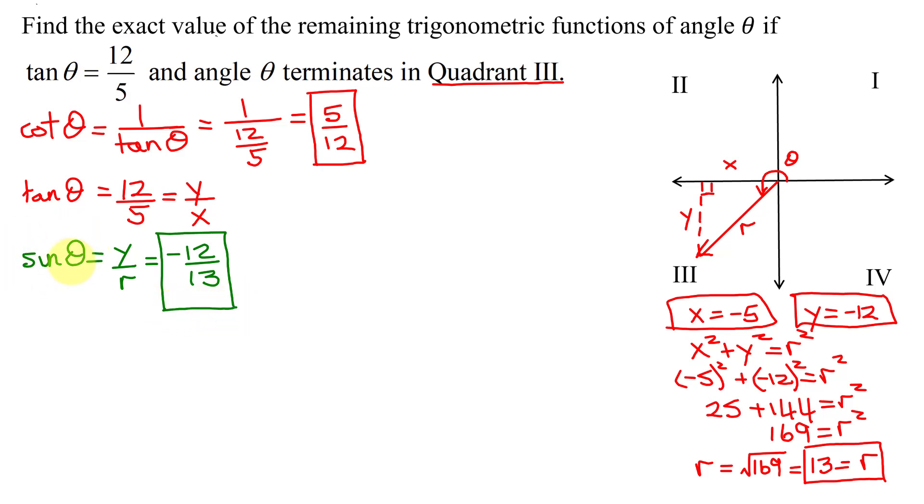Now, to find its reciprocal, that's the cosecant of theta. That is just 1 divided by the sine of theta. So I just need to take the reciprocal of this fraction by flipping it upside down. So I'm going to get 13 over negative 12. Remember, we never leave a negative in the denominator, so it's negative 13 twelfths.